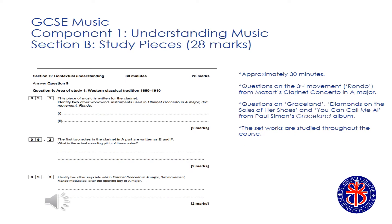For Section B of the exam, students have to answer two sets of questions on pieces of music that have been studied throughout the course. In particular, students will study the third movement of Mozart's Clarinet Concerto and three songs by Paul Simon, including Graceland, Diamonds on the Soles of her Shoes and You Can Call Me Al. Section B of the exam lasts for half an hour and students may move through each question at their own pace.